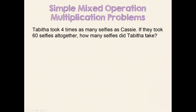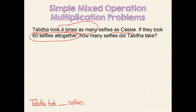Here is a simple mixed operation multiplication problem. Tabitha took four times as many selfies as Cassie. If they took 60 selfies all together, how many selfies did Tabitha take? First, we will rewrite the question in sentence form in order to maintain our focus: "Tabitha took blank selfies." When re-reading the problem, we identify the important information we need to solve the problem. We should start our model with one unit bar each for Tabitha and Cassie. Since the problem tells us that Tabitha took four times as many selfies as Cassie, let's count those unit bars on.